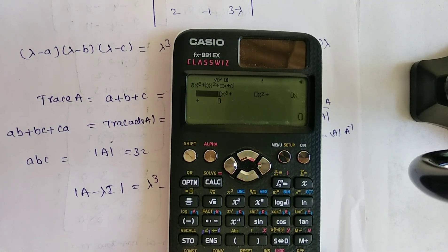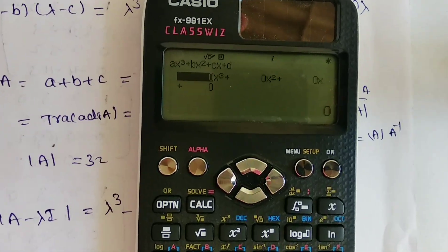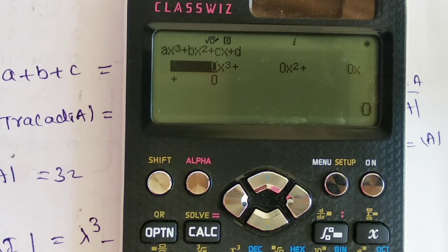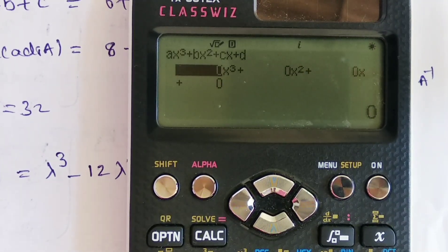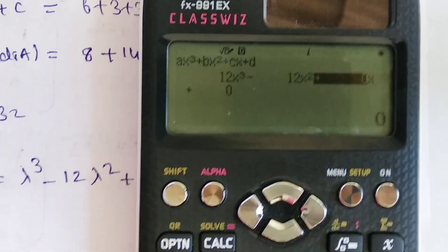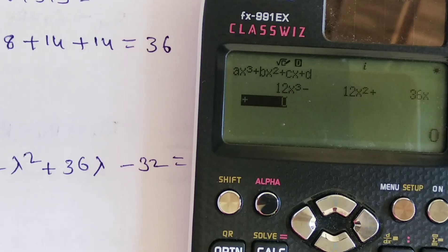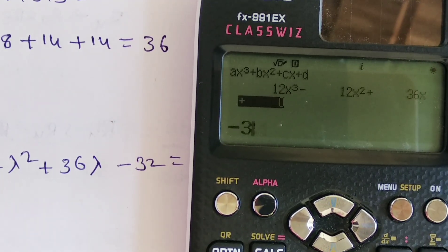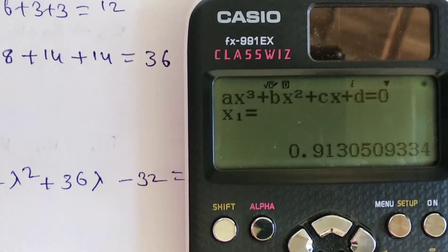Enter the coefficients: λ³ coefficient is 1, λ² coefficient is -12, λ coefficient is 36, and constant is -32. Press equals to get the lambda values.